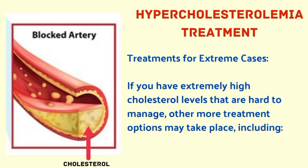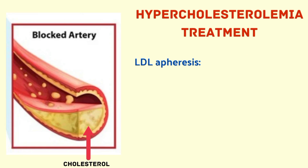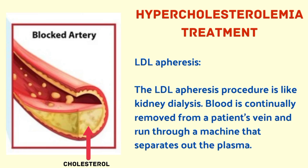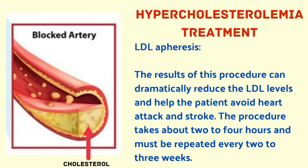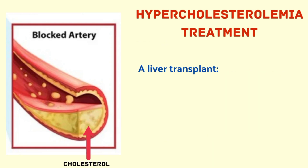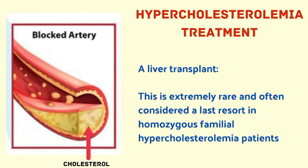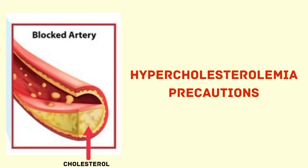For extreme cases with very high cholesterol levels that are hard to manage, other treatment options include LDL apheresis. Similar to kidney dialysis, blood is continuously removed from a patient's vein, run through a machine that separates the plasma, and the rest is returned through a different vein. The plasma is then processed to remove LDL, dramatically reducing LDL levels and helping avoid heart attack and stroke. The procedure takes two to four hours and must be repeated every two to three weeks. A liver transplant is an extremely rare last resort for homozygous familial hypercholesterolemia patients.